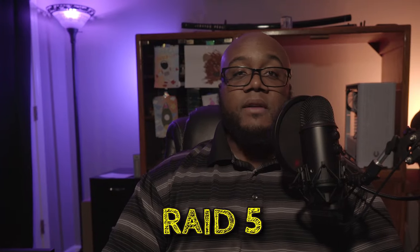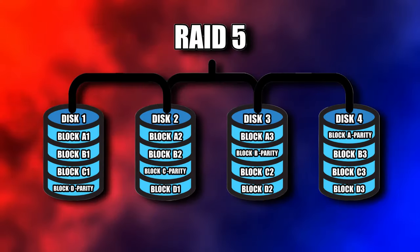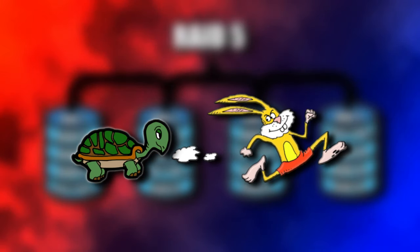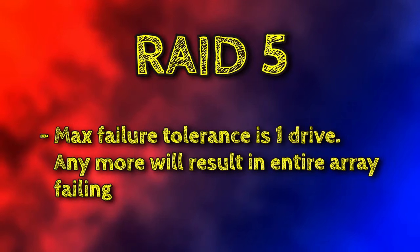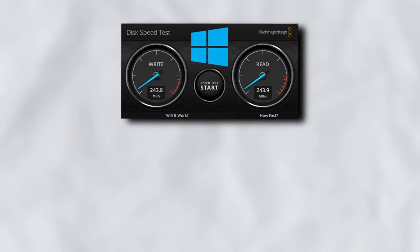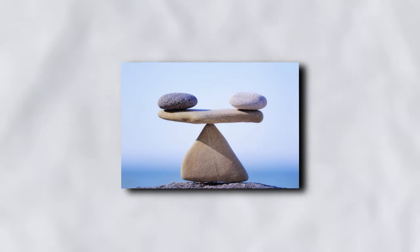With RAID 5, the data is striped across multiple drives, with parity being stored in each drive as opposed to one dedicated drive. Because the parity is spread across multiple drives, read speeds are relatively fast, but this comes at a cost of slower write speeds. On top of that, RAID 5 can't endure more than one drive failure at a time. When it comes to both speed and redundancy, RAID 5 is the most balanced and commonly used configuration.